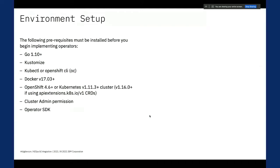Before writing an operator, we need to have our environment set up. The following prerequisites must be installed: Go, since we'll be using the Operator SDK with Go to create the operator; Kustomize, to manipulate and modify YAML files on the fly; and a kubectl CLI or OpenShift CLI. Since we'll be deploying to an OpenShift cluster, we'll be using the OpenShift CLI, shortened to OC.